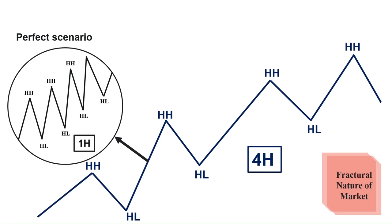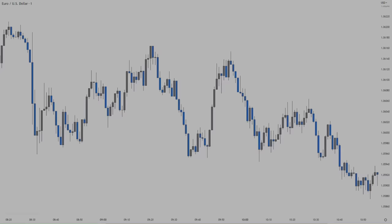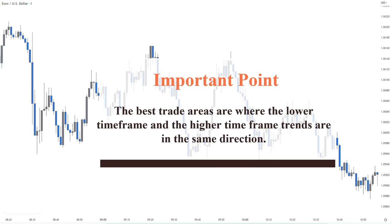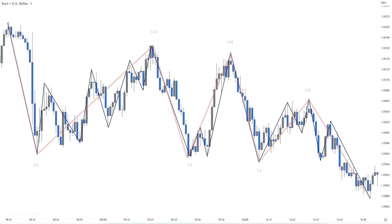But in the imperfect scenario, the price will create fake breakouts before pushing to the upside to develop higher highs. When traders see these fake-outs, they think the price will reverse, go short in the supply zone, and get stopped. So if you have in-depth knowledge of the market structure, you will realize that since the higher timeframe is bullish, you find an order block and go with the dominant trend. The best trade areas are where the lower timeframe and the higher timeframe are in the same direction. Here on the EURUSD 1-minute chart, if we zoom out to the 5-minute chart, trading in areas where both timeframes align makes more sense.